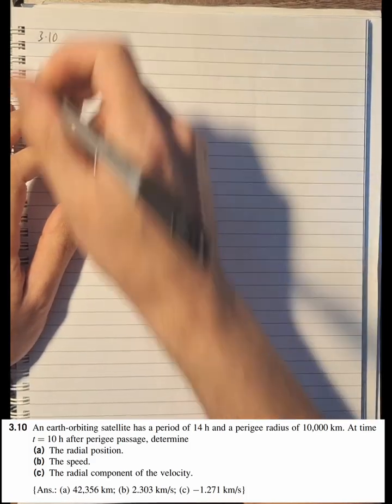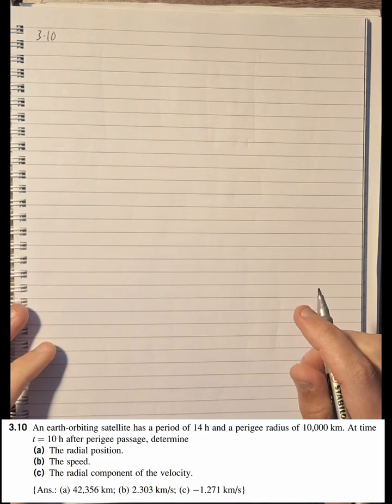Problem 3.10 says an Earth-orbiting satellite has a period of 14 hours and a perigee radius of 10,000 kilometers. At time t = 10 hours after perigee passage, determine the radial position, the speed, and the radial component of the velocity. Now this one is a little bit trickier and we need to do some funky equations.